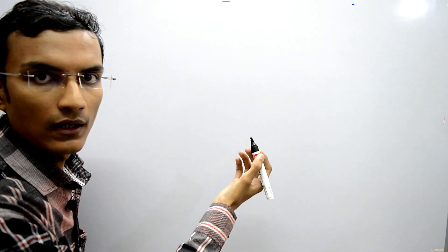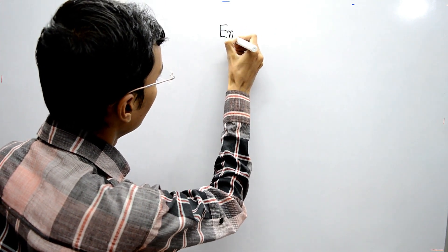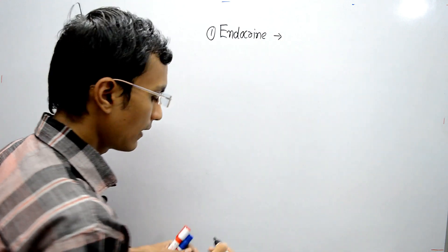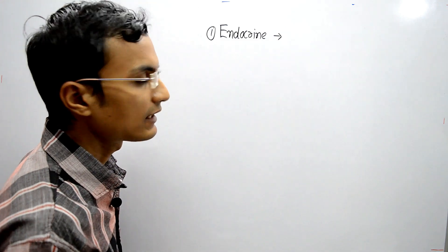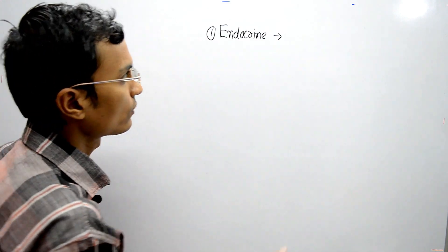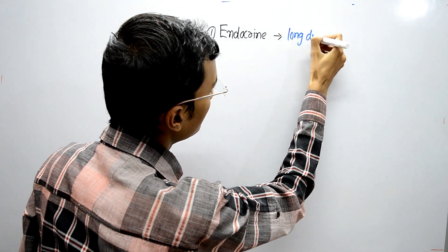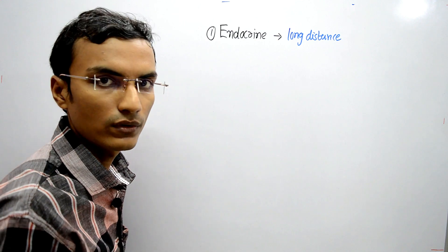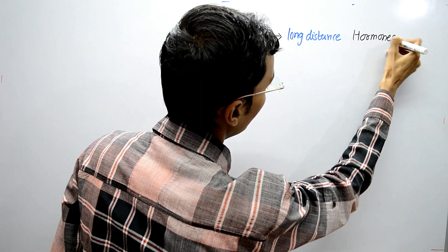The first type is endocrine signaling. In endocrine signaling, the signaling molecules are released by the cell and act on target cells which are located at a long distance. The signaling molecules in endocrine signaling are called hormones.